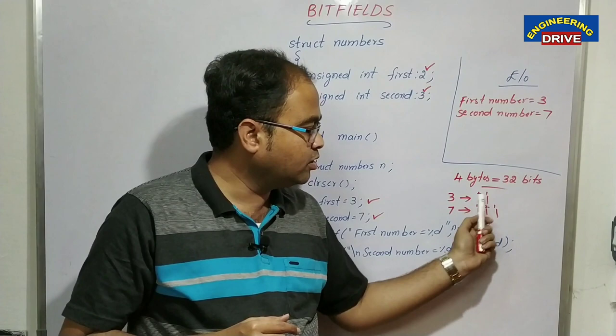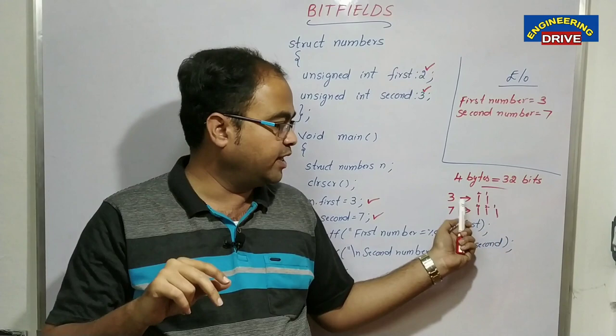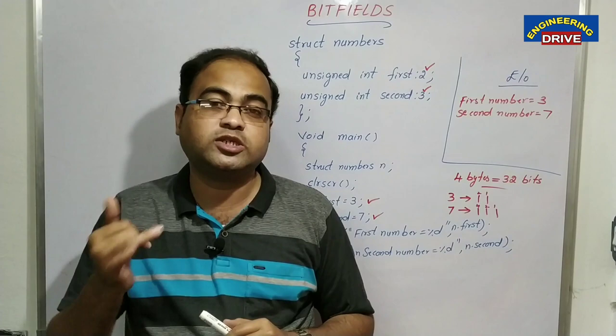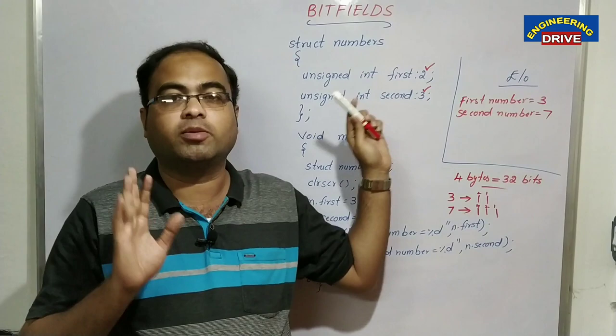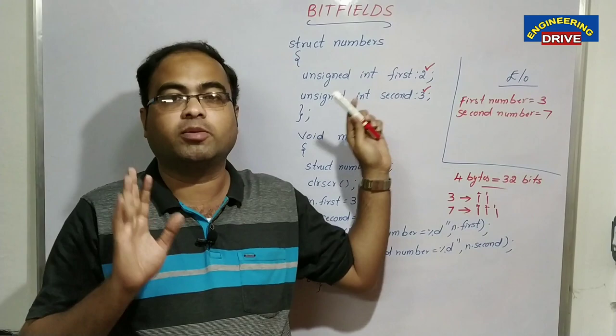Out of 32 bits total, we only require 2 plus 3 equals 5 bits to store the two numbers three and seven. So 27 bits are getting wasted. To save that extra space, we can make use of the bit fields topic. Bit fields are used to provide the exact number of bits required for storage of values.